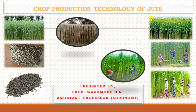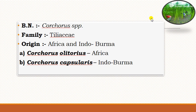Jute is an important fiber crop next to cotton. The botanical name of jute — there are two types of jute species: the first one is white jute, with the botanical name Corchorus capsularis, and the second one is Tossa jute, with the botanical name Corchorus olitorius.